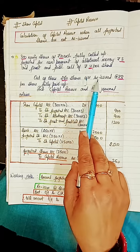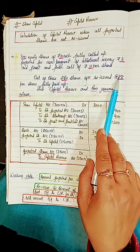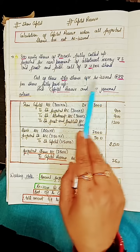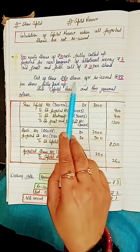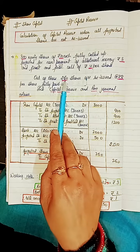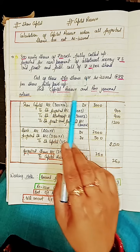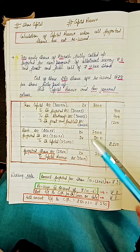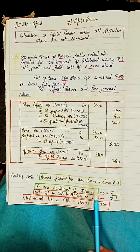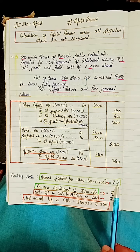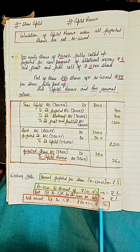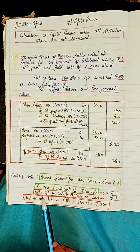Of these, 250 shares are reissued at rupees 8 fully paid up, which means there is a discount of rupees 2 on the reissue of these 250 shares. To find capital reserve, the amount forfeited per share is rupees 3 and the reissue discount is rupees 2.